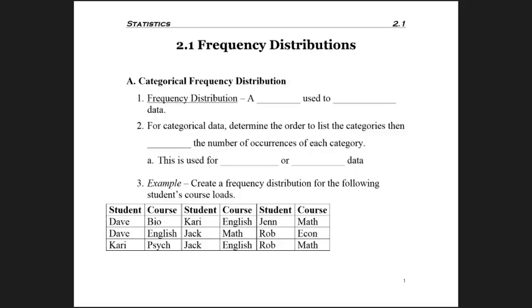Chapter two is focused on organizing the data. The first thing we're going to look at is 2.1, where we're dealing with frequency distributions, and so we need to define that. There's two types we'll look at. The first one is for categorical data, but the description of a frequency distribution is it's just a table that's used to organize the data.